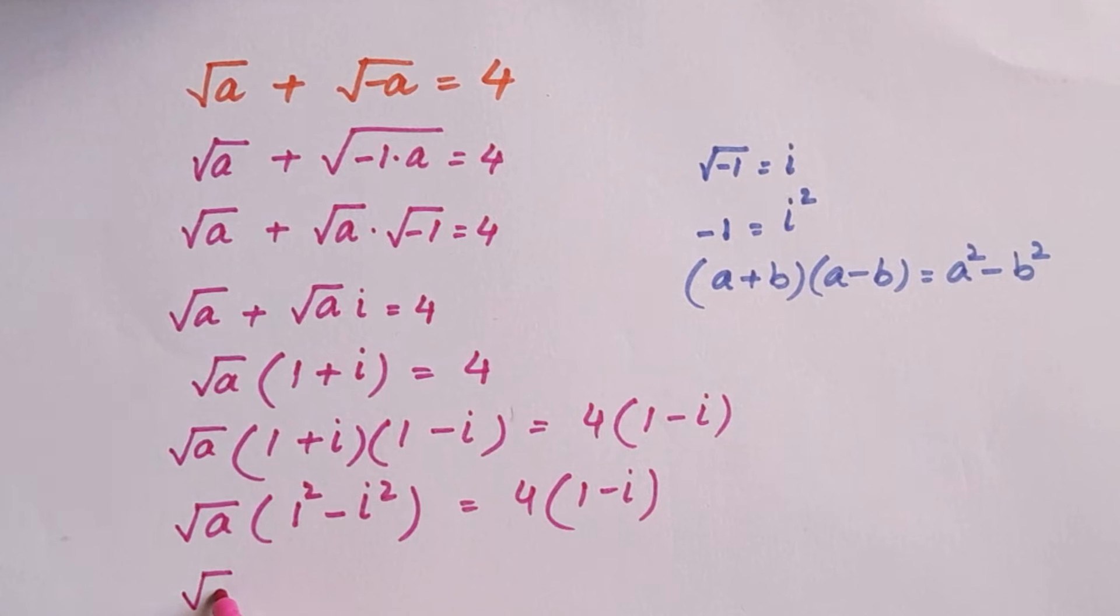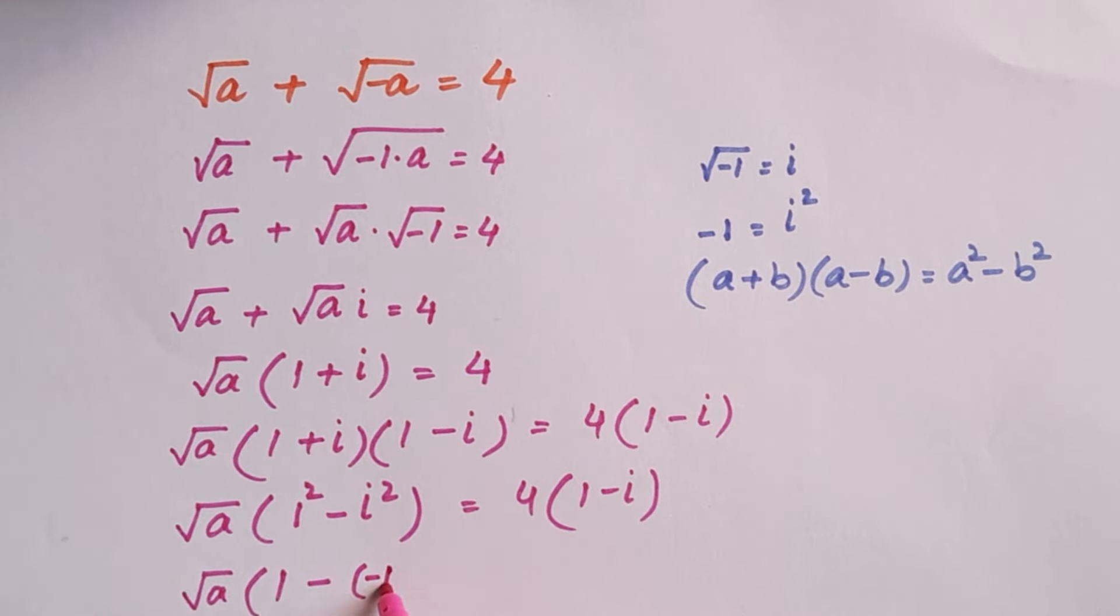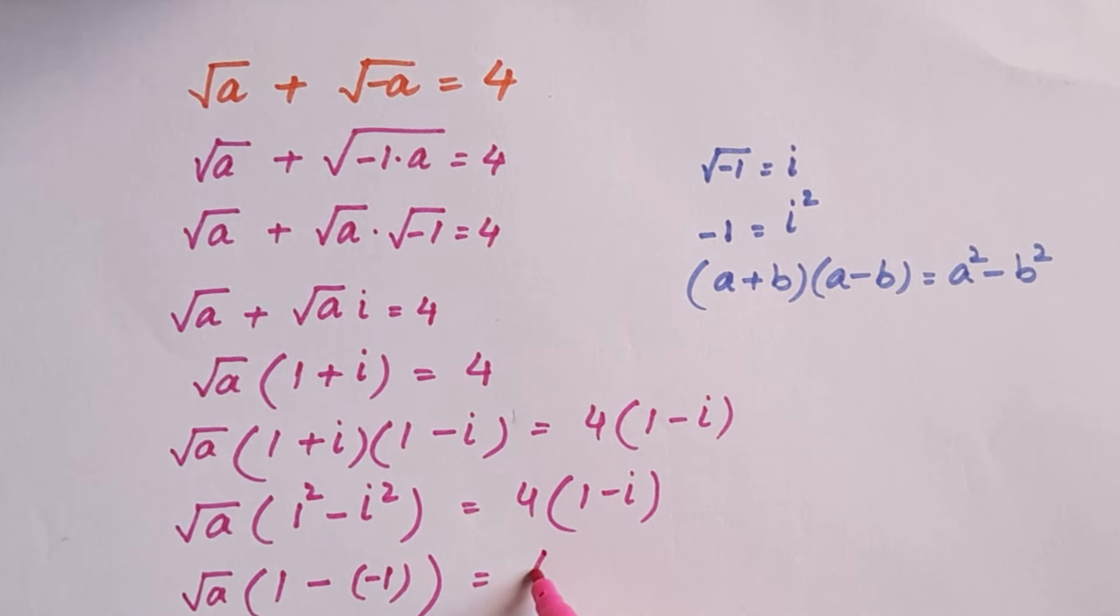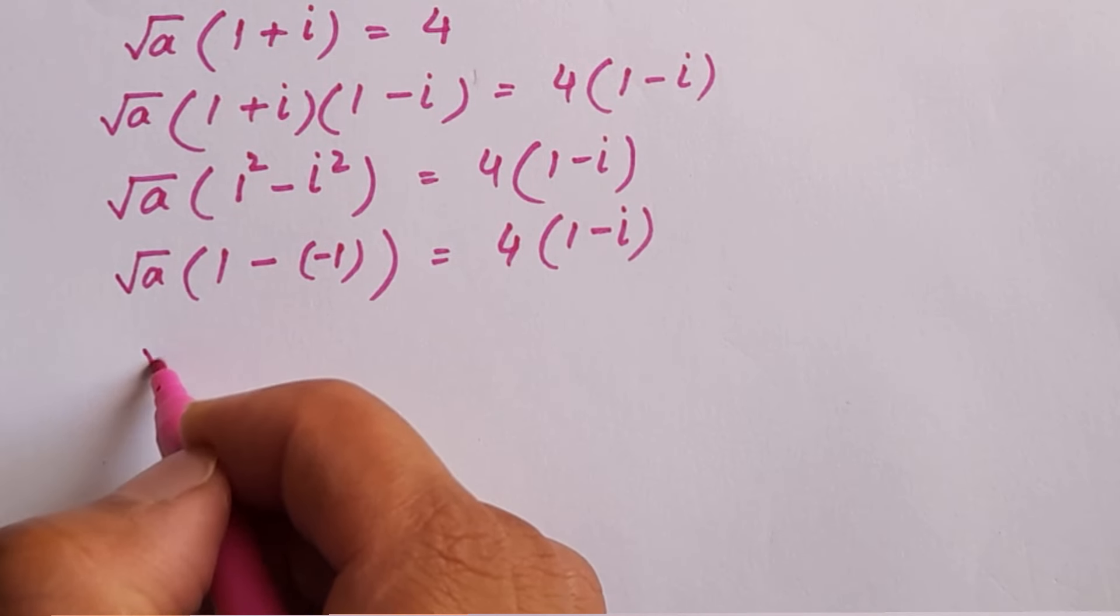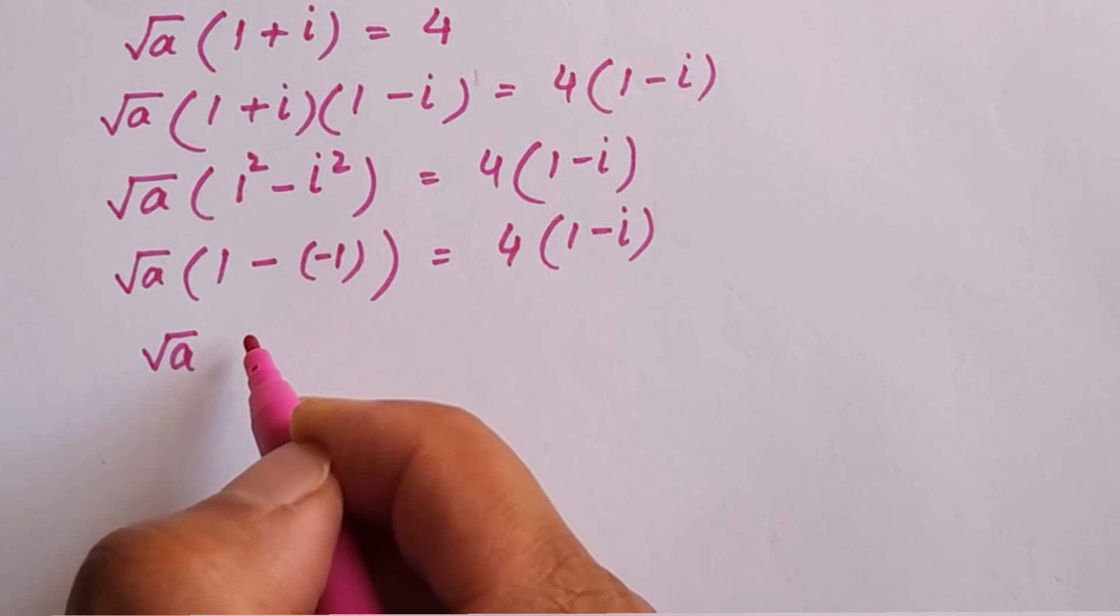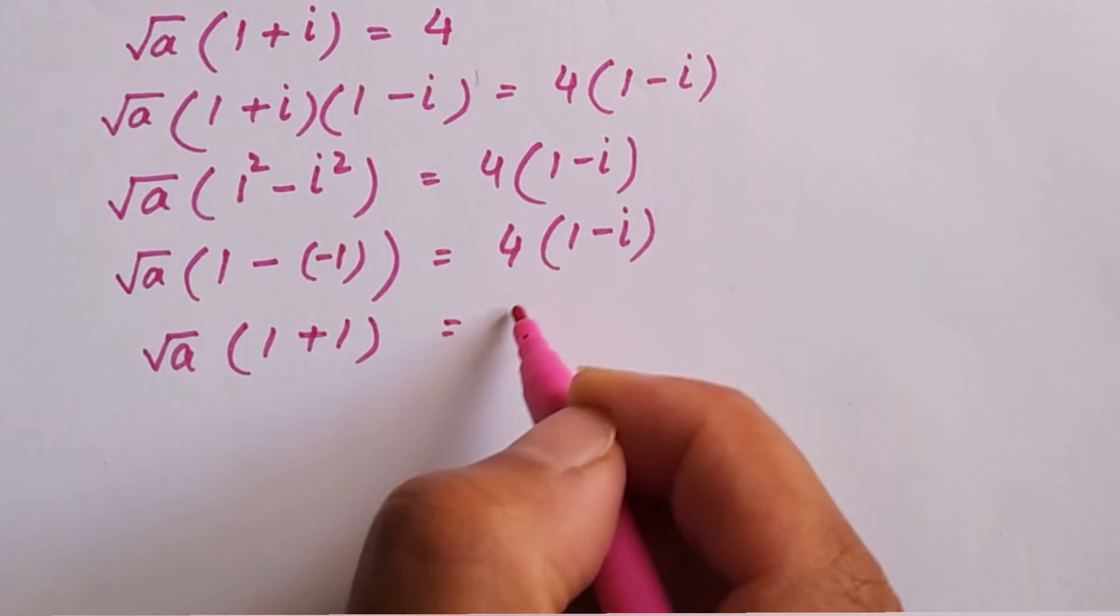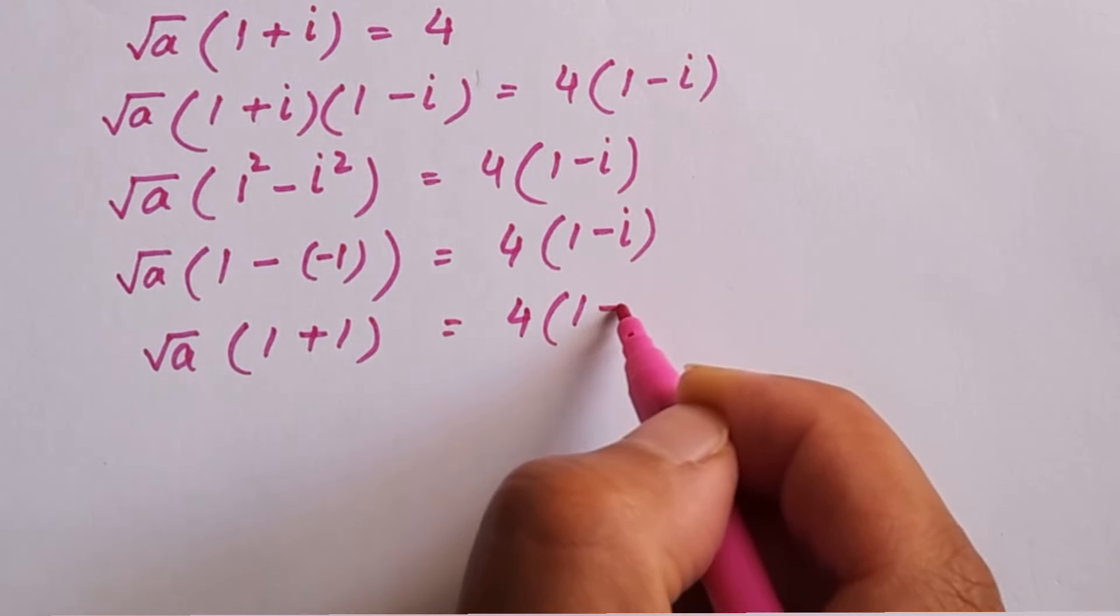So root a times 1 minus, root a times 1 because 1 square is 1 again, minus minus 1. Minus times minus 1 because iota square is equal to minus 1. 4 times 1 minus iota as it is. So root a times 2 equals 4 times 1 minus iota.